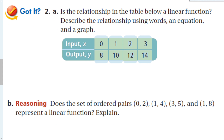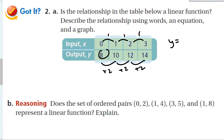For the guided problem: is the relationship in the table a linear function? The x values go up by 1 each time and the y values go up by 2 each time. Because it increases by the same constant amount, this is a linear function. The equation is y = 2x + 8. Checking: 2 times 1 is 2, plus 8 is 10 — correct. 2 times 2 is 4, plus 8 is 12 — correct. It works.